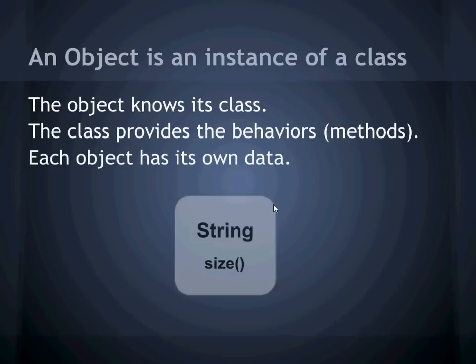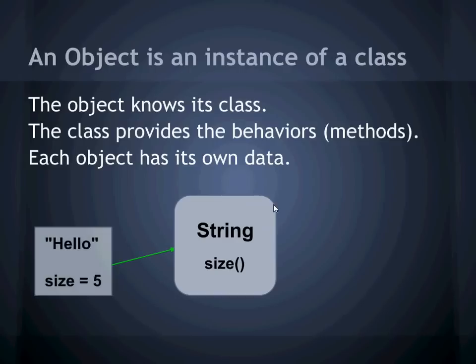Taking string as an example again, strings have a method size that tells you how long the string is. They all share the definition of this method because it lives on the class string. But not all strings will respond with the same answer because they're not all the same size. The actual size is a property of the particular string, the object.